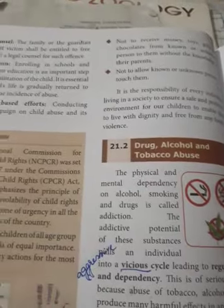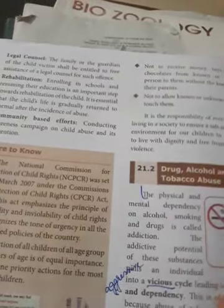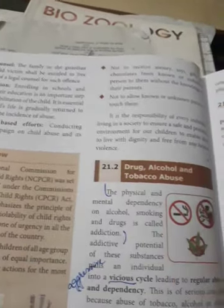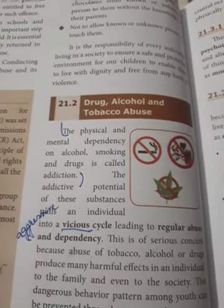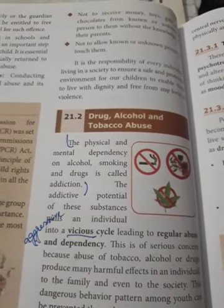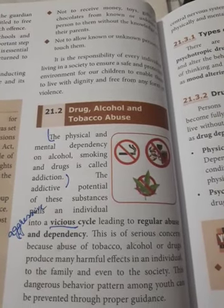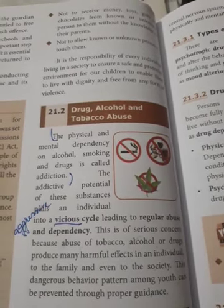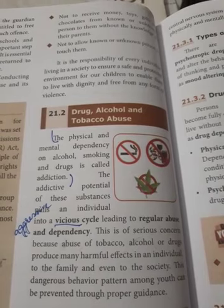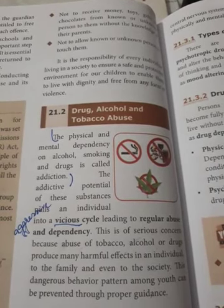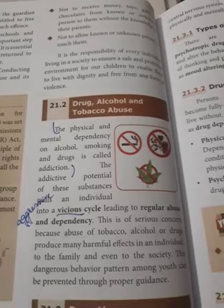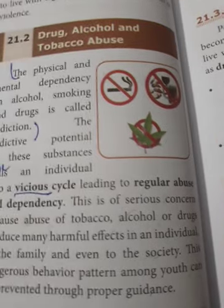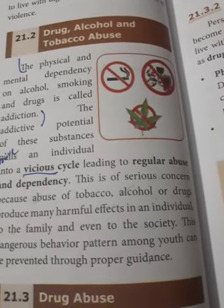For a two marks question: what do you mean by addiction? The physical and mental dependency on alcohol, smoking, and drugs is called addiction. This is a serious concern because abuse of drug, alcohol, and tobacco produces many harmful effects on the individual, to the family, and even to society. The dangerous behavior pattern among youth can be prevented through proper guidance.